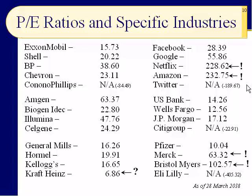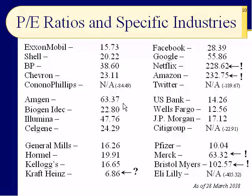Now let's look at Amgen, Biogen, Illumina, and Celgene — these are biotech companies. Amgen is well-established with a PE around 63, meaning investors are excited. Biogen not so much. Illumina is close to 50, and Celgene around 24-25. If you had looked six months or a year ago, the numbers would have been all different in different directions — Celgene was way high, Amgen was down. It's all about investors' expectations for what's going to happen in the future. Right now, investors are far more excited about Amgen and Illumina than Biogen or Celgene, but all have fairly robust PEs.